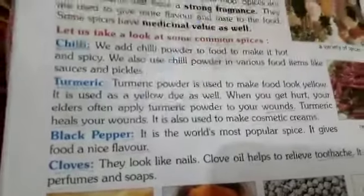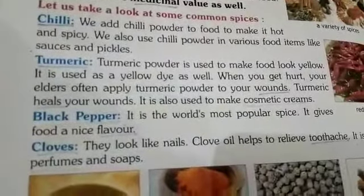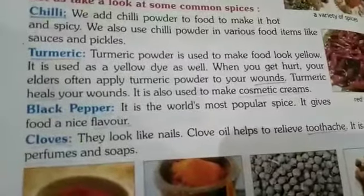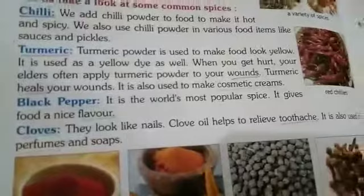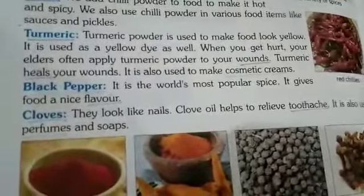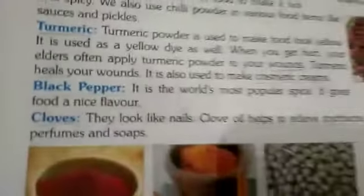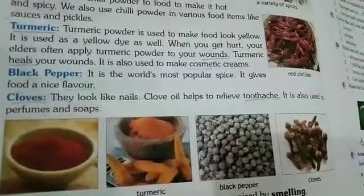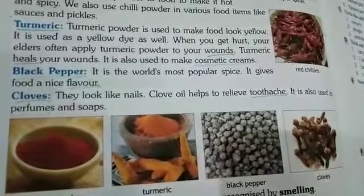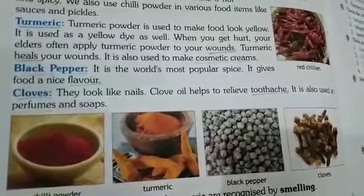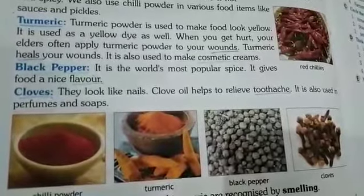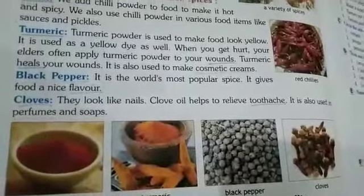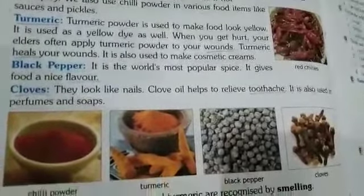The third spice is black pepper, which we call kali mirch. Black pepper is the most popular spice in the world and gives a nice flavor to food. The fourth spice is cloves, which we call laung. Cloves look like nails, and clove oil gives relief to toothache. Cloves are also used in perfumes and soaps.